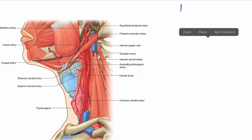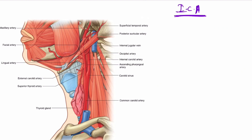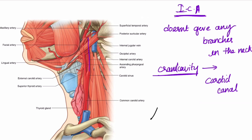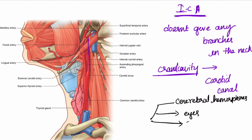The internal carotid artery does not give any branches in the neck. It ascends towards the base of the skull and enters the cranial cavity through the carotid canal. It supplies the cerebral hemispheres, the eyes, the contents of the orbit, and also the forehead.